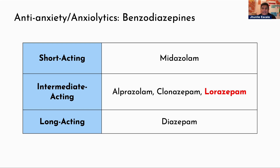Hi everyone, let's start with pharmacology in psychiatric and mental health nursing. For this session we'll be starting with anti-anxiety medications, sometimes called anxiolytics or more commonly known as benzodiazepines. I have categorized the benzodiazepines into three groups: short-acting, intermediate-acting, and long-acting.